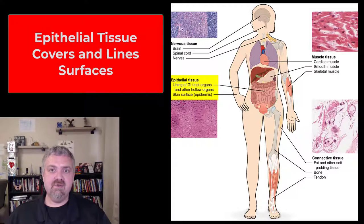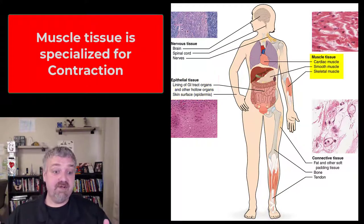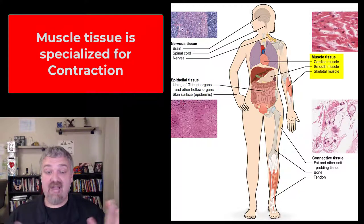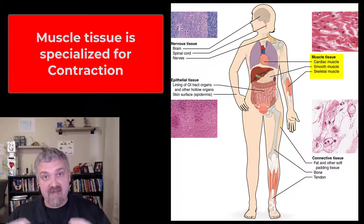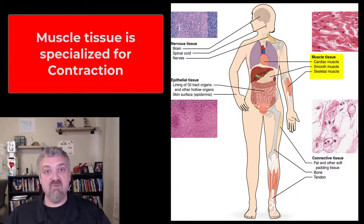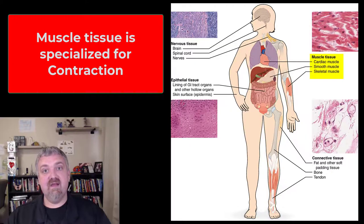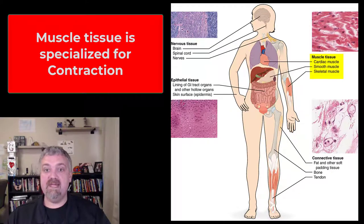I'll come back to connective tissue in just a moment. Muscle tissue — pretty straightforward. Its job is specialized for contraction, so the tissue that contracts in your body is going to be muscle tissue. You'll see the three types: we have cardiac muscle, that's in your heart; smooth muscle, which lines hollow organs; and then skeletal muscle is the muscle we think of with voluntary control that moves our body.